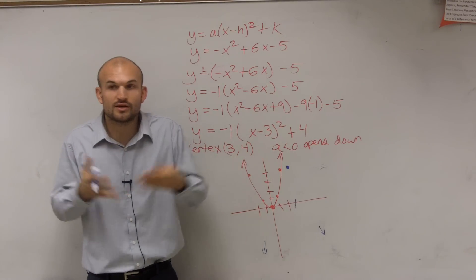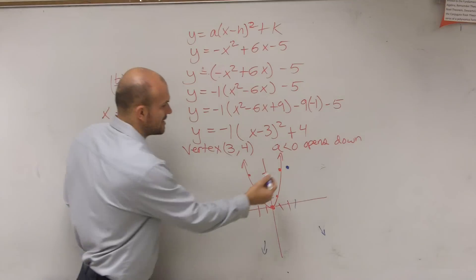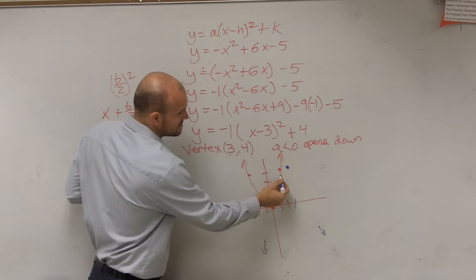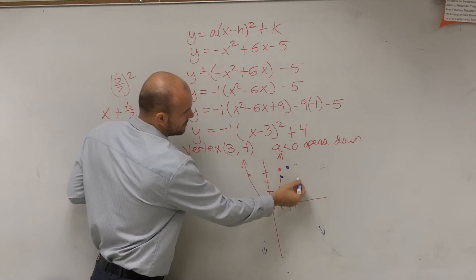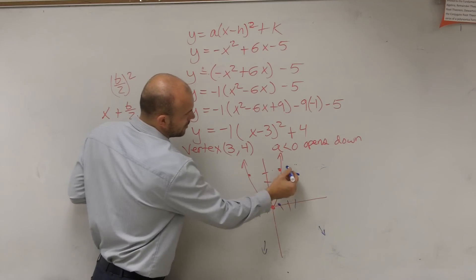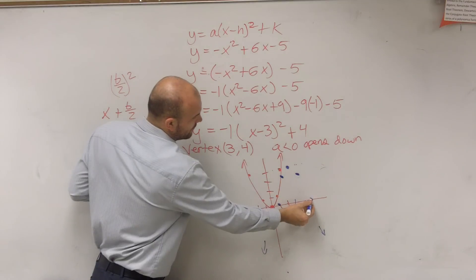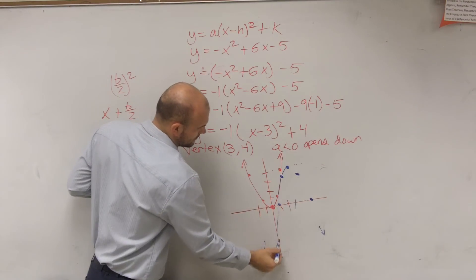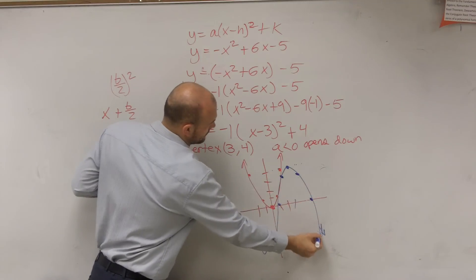No. So therefore, your relationship is still going to be the same. I'm going to go over 1, down 1. Over 1, down 1. Over 2, down 4. Over 2, down 4 from your vertex.